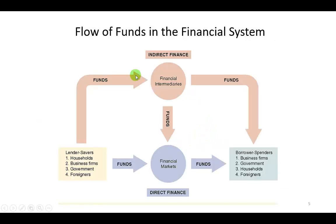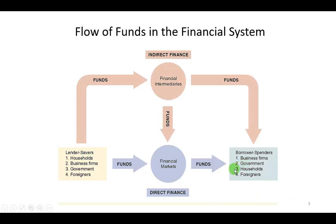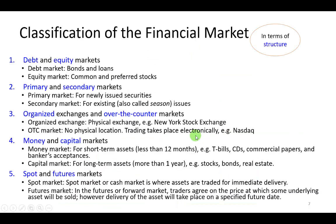How are these funds made available in the financial market from those who provide them to those who need them? For the most part, we go through a system of financial institutions we refer to as financial intermediaries. These financial intermediaries — like commercial banks, investment banks, and finance companies — intermediate between the surplus spending units and the deficit spending units, thereby facilitating the flow of funds from one segment of the market to the other.